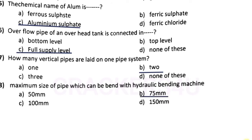Question number seventeen: maximum size of pipe which can be bent with hydraulic bending machine — answer option B, 75 mm.